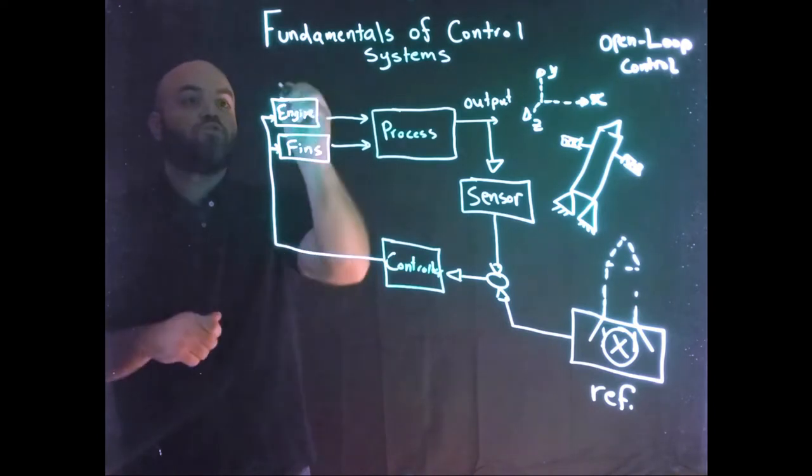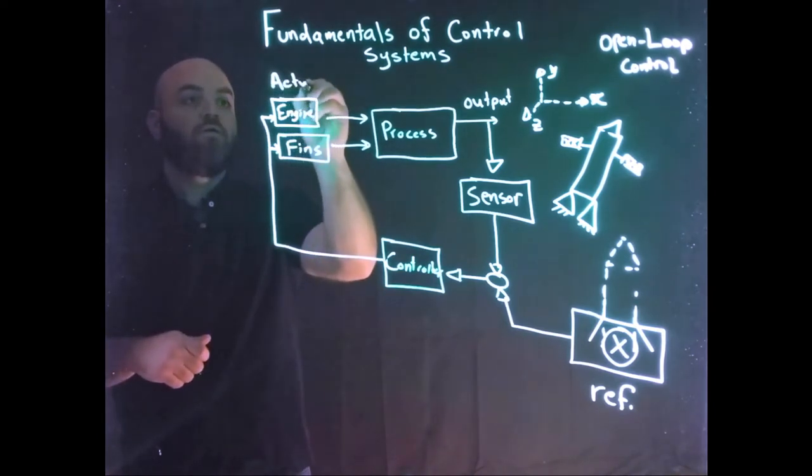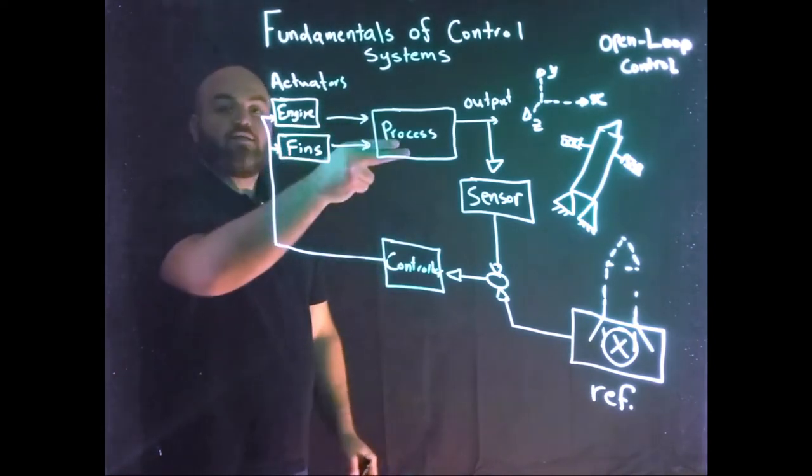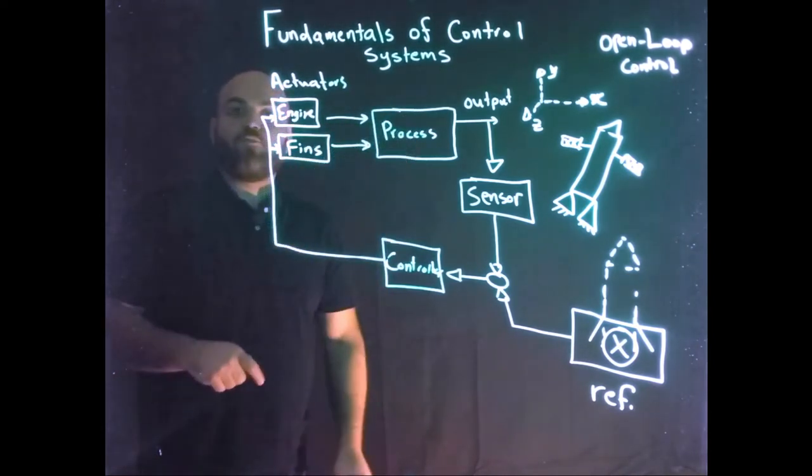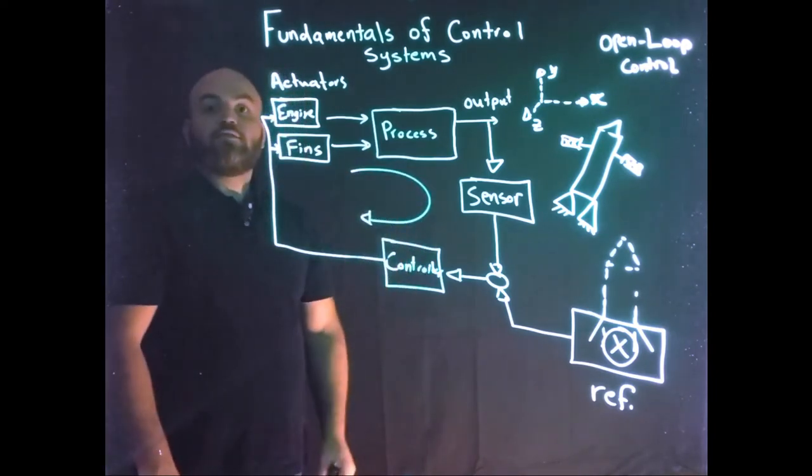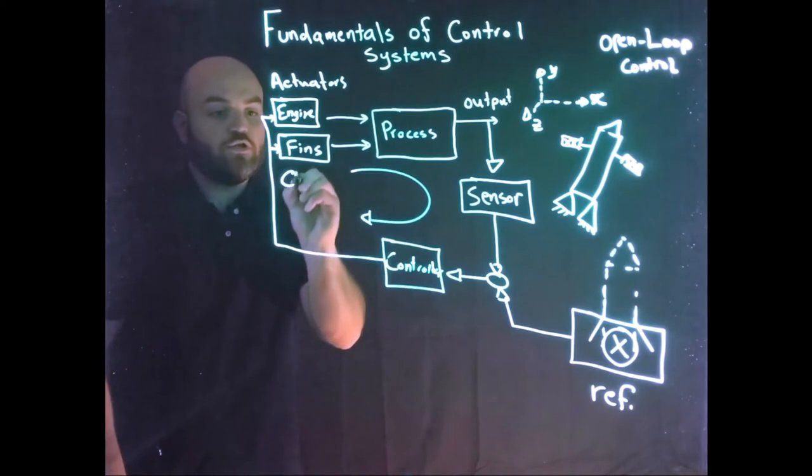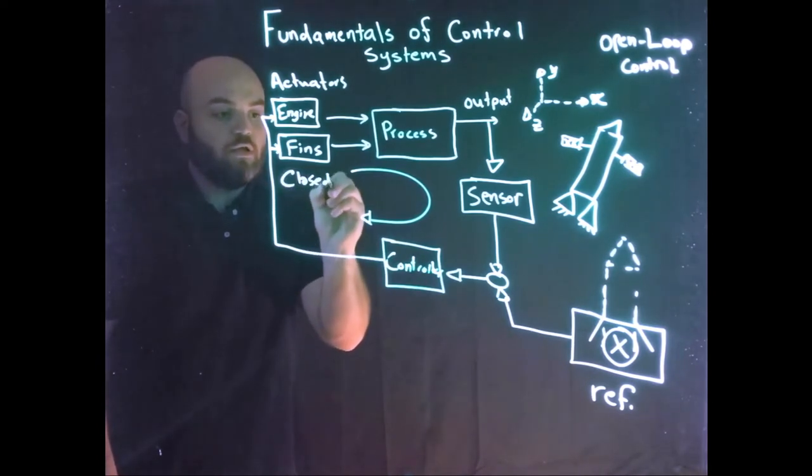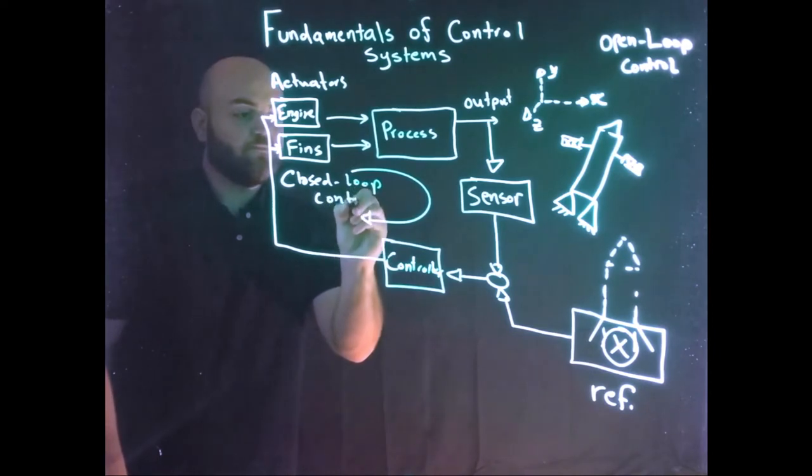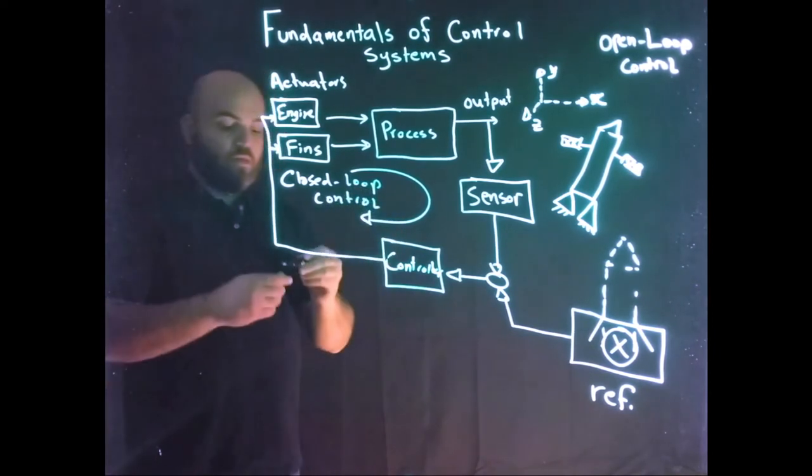The controller uses the sensors, uses the reference model, the reference signal, and then says, okay, I need to generate signals to my fin and engine, which are typically referred to as actuators, and then they will act on my process and generate an output. And this loop right here is why it's called closed loop control.